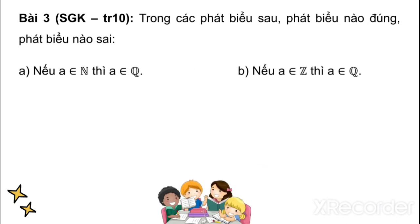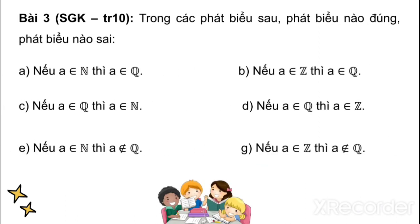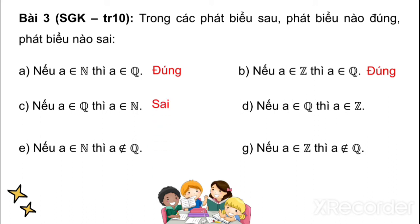Tiếp theo: D — không thuộc Q; âm 7,3 — thuộc Q; 3 2 phần 9 — thuộc Q. Bài 3: Phát biểu nào đúng, phát biểu nào sai? Câu A — nếu A thuộc N thì A thuộc Q: đúng. Câu B — nếu A thuộc Z thì A thuộc Q: đúng. Câu C — nếu A thuộc Q thì A thuộc N: sai, vì số hữu tỉ chưa chắc thuộc số tự nhiên. Câu D — nếu A thuộc Q thì A thuộc Z: sai. Câu E — nếu A thuộc N thì A không thuộc Q: sai. Câu F — nếu A thuộc Z thì A không thuộc Q: sai.